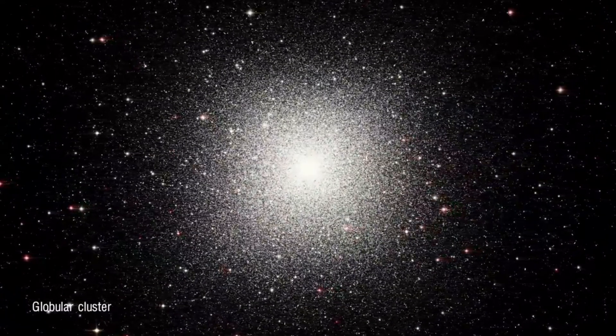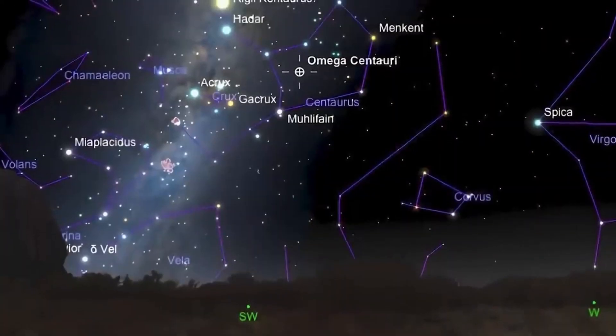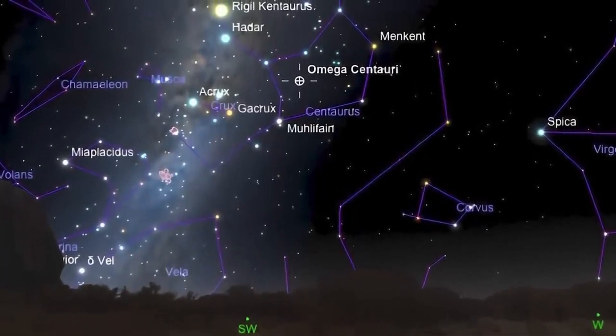Our Milky Way galaxy, for example, contains at least 150 globular clusters within its halo. The largest and heaviest globular cluster in the Milky Way is Omega Centauri, located about 17,000 light-years away from Earth.